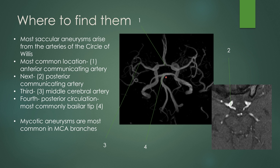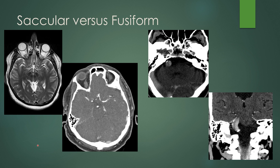Mycotic or infectious aneurysms are most common in the more distal MCA branches — M2, M3, M4 segments. Regarding saccular versus fusiform: here is a saccular aneurysm of the anterior communicating artery showing low signal on T2, and here it is on CTA. As opposed to a fusiform aneurysm involving a longer segment — this one is a dissecting fusiform aneurysm with a yin-yang appearance. This is a dissecting fusiform aneurysm of the basilar artery.